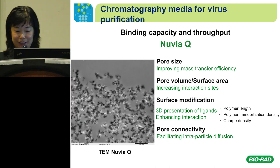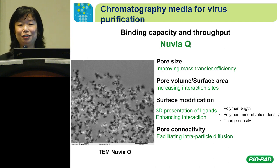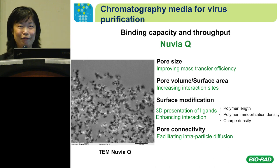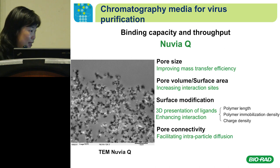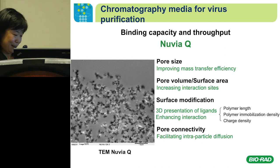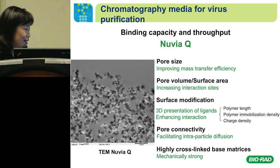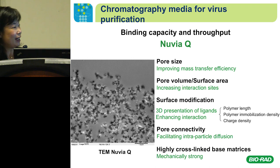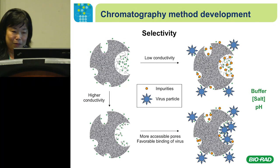Since we are creating many pores, we still need a strong resin — to maintain high productivity, the beads must be strong so you can run at fast flow rates to produce more virus. We also create more interconnected pores to further increase surface area. Professor Carter helped us take a TEM image of the Nuvia VQ, and you can see that the pores are really open and well-connected, with spaces connected inside the beads. We use this to enhance interparticle diffusion and further enhance virus binding.